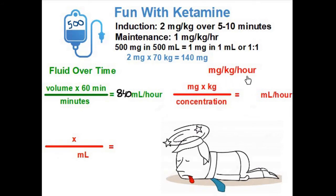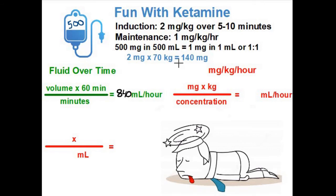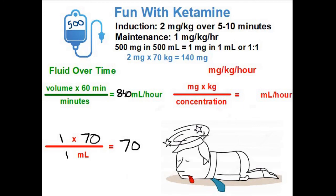What about this milligrams per kilogram per hour calculation? Do we know the milligrams? Yes, one milligram. Do we know the kilograms? Yes, the patient weighs 70 kilograms, and we calculated our concentration as one-to-one. I'll pause here while you do that calculation, and then we can double check it. One milligram per kilogram, 70 kilograms, and the concentration is one-to-one — that math is pretty simple. The answer is 70 milliliters per hour.